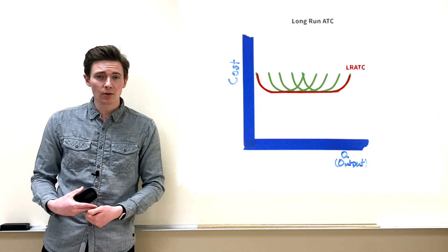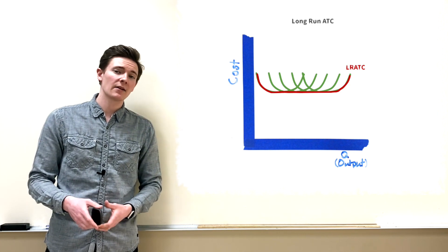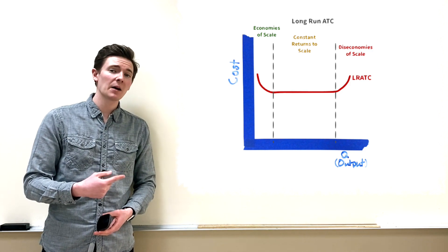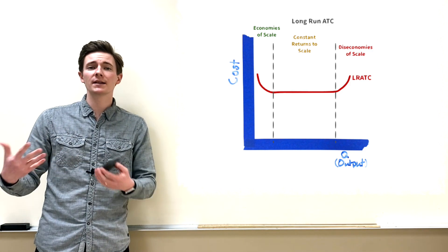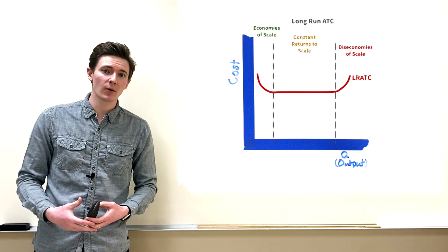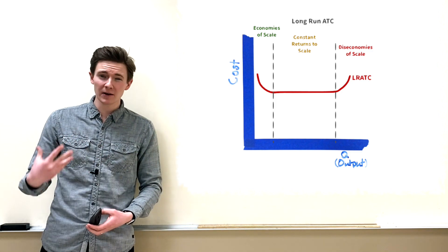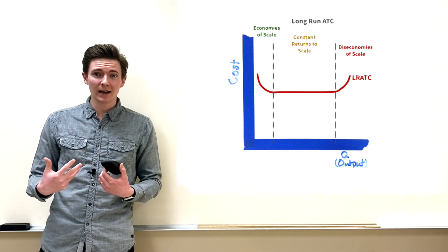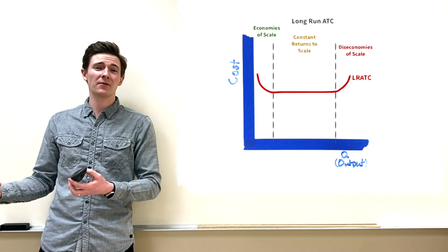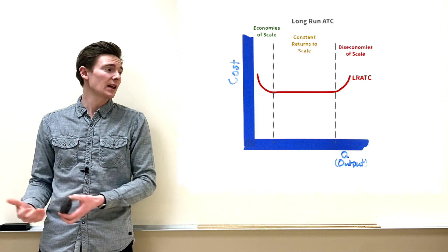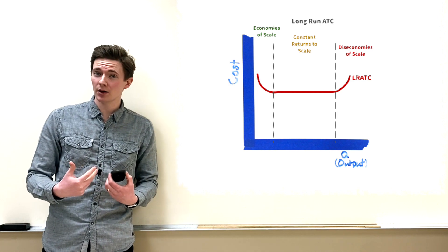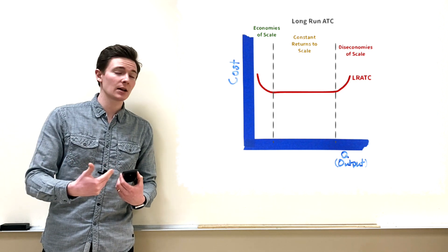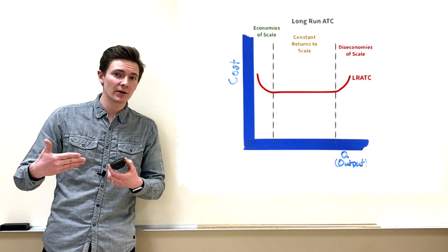The long-run ATC curve breaks into three segments: economies of scale, constant returns to scale, and diseconomies of scale. Economies of scale means increasing the size of your operation produces things way cheaper per unit. Microchips are an example — a small operation produces them expensively, but large companies can produce the same chips at a fraction of the cost as output increases and average costs fall.